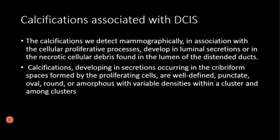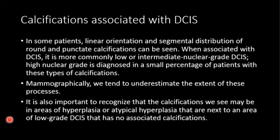The calcifications we detect mammographically in association with cellular proliferation develop in the luminal secretions — the duct secretes material into the lumen. The calcifications we see are in the lumen, not in the tumor itself. Sometimes in the necrotic cellular debris in the lumen, cells die and enter the ductal lumen and then calcify. So we are seeing calcifications in the ducts, not the tumor. The calcifications can be well-defined, punctate, oval, round, or amorphous with variable densities within or between clusters.